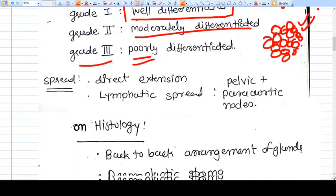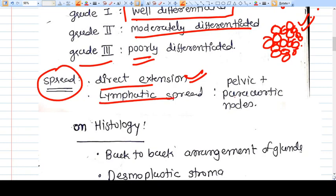Now how they spread: this carcinoma spreads by direct extension, which is the very common route. Lymphatic spread is also there to the pelvic and para-aortic lymph nodes.